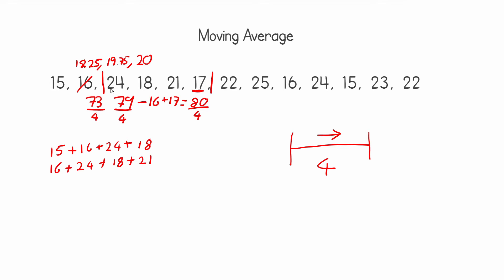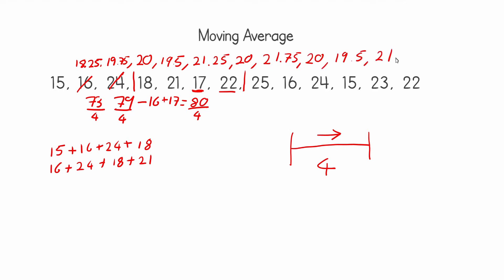We continue in this fashion: subtract 24 from 80 and add 22, resulting in the window moving one position forward. We keep working out the moving average this way. For this particular example you get the following results. Once we arrive at the end and there are no more places where the window can move forward, we take all of these values and plot them on a chart, giving us that smooth trend line that we saw before.